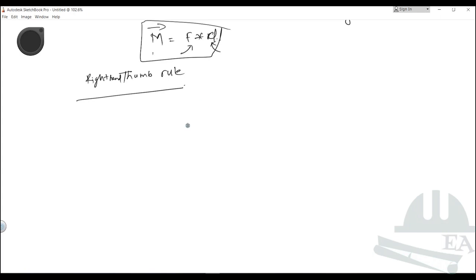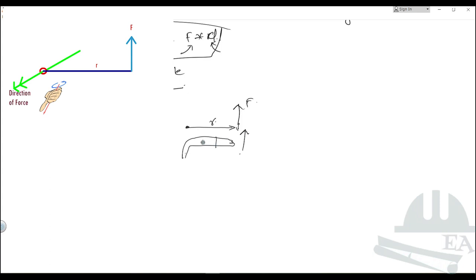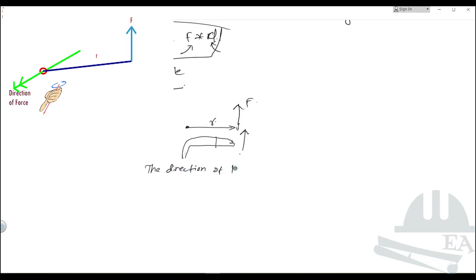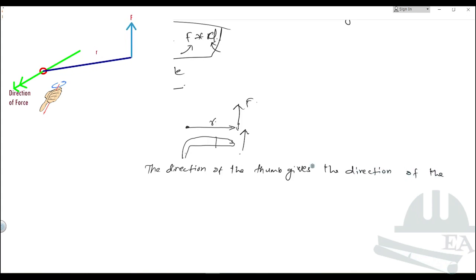This is the point about which the rotation takes place, and this is the direction of the force F. This distance is R — so this is the direction of R and this is the direction of the force. If you place your palm in the direction of R and curl your fingers in the direction of the force — in the upward direction — where your thumb points gives the direction of the movement.